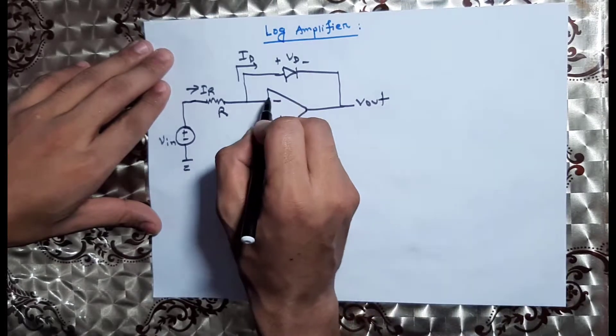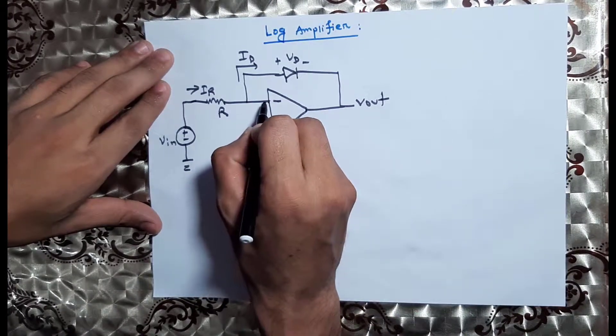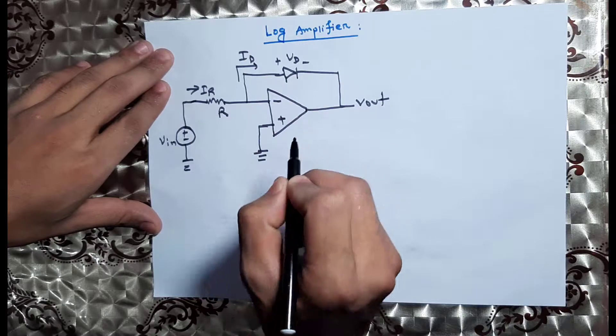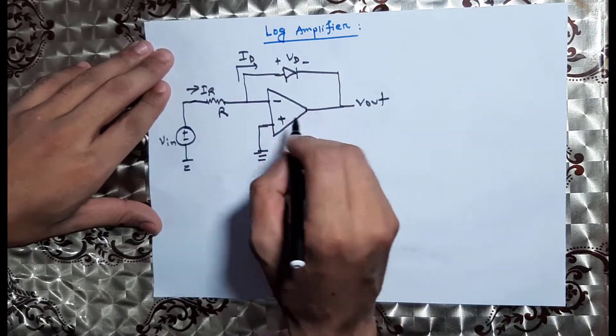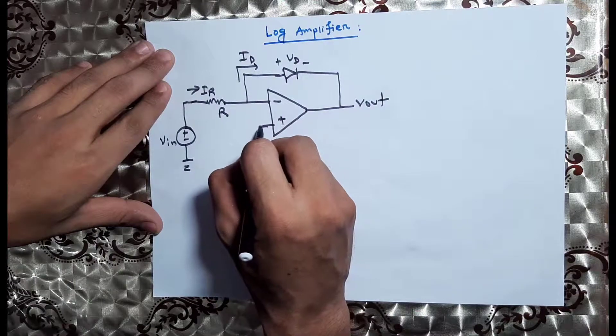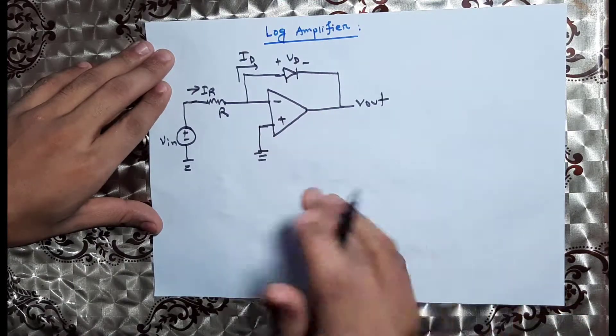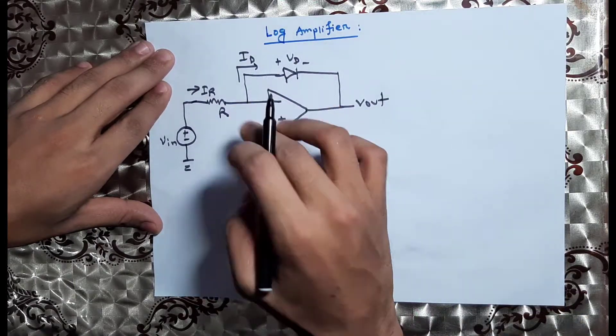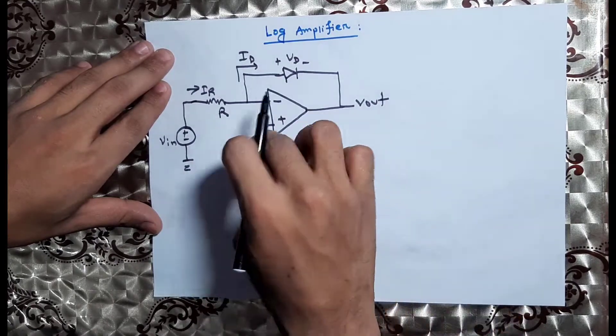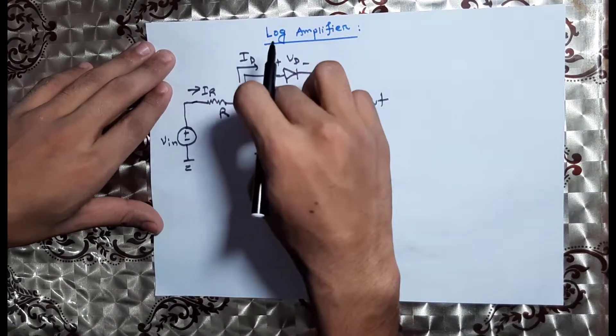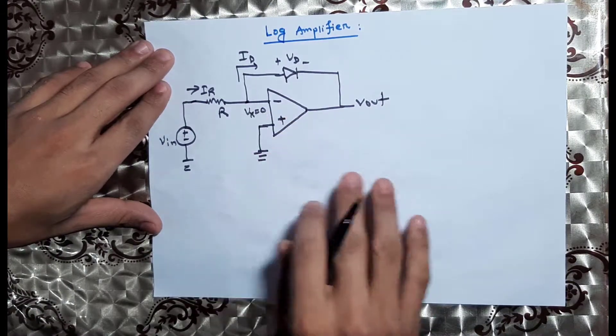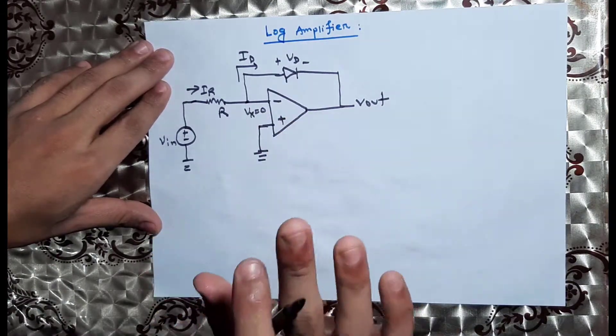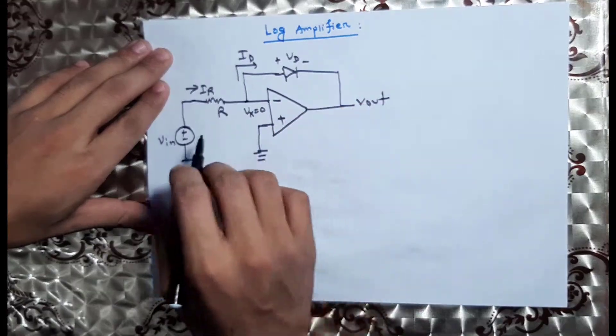In the previous video, we saw negative feedback. We work on the virtual ground concept. With virtual ground, the potential at the inverting and non-inverting terminal is zero - it's grounded.